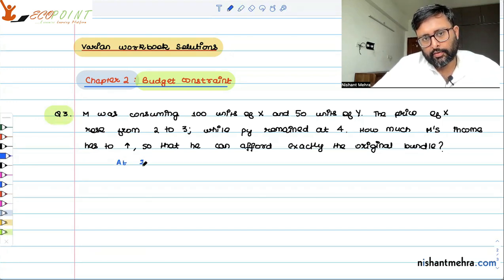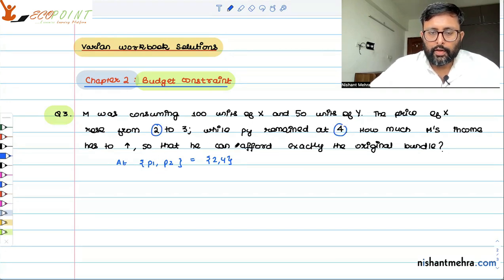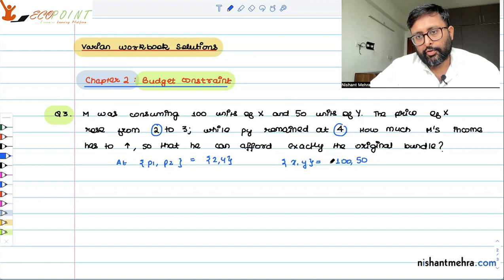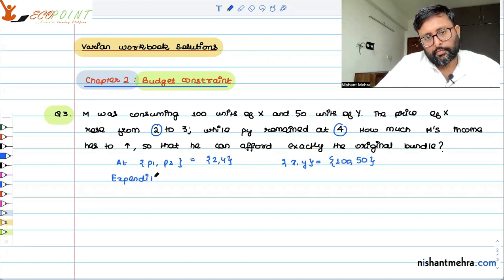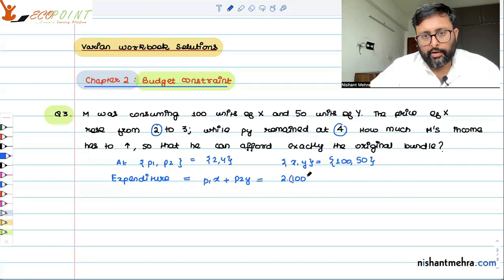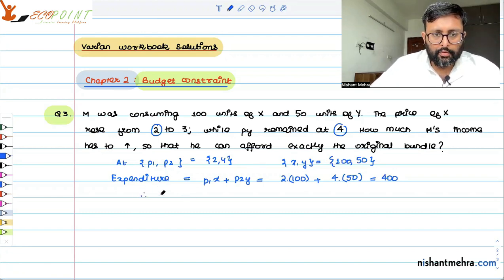This is the original bundle. So at the original prices, it was 2, 4. The price of X was earlier 2, price of Y is remaining at 4. You were consuming 100 units of X and 50 units of Y. So what is the expenditure which you were making? P1X plus P2Y, so 200 plus 200, that is 400. Income is equal to expenditure. Therefore, original income is 400.